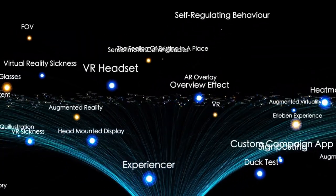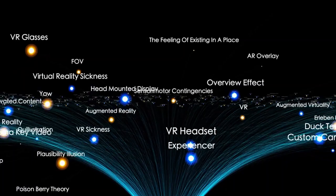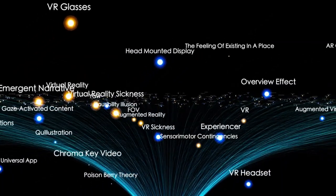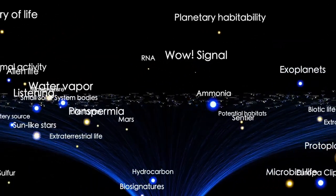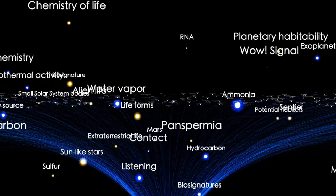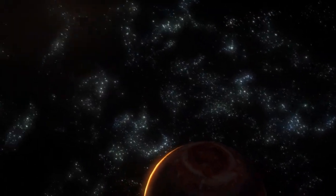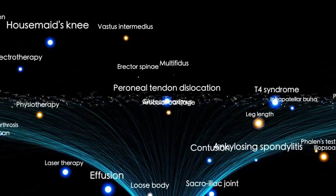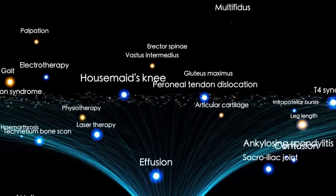However, our ability to observe the universe has a limit. This is because light, the main source of information about distant objects, travels at a certain speed. Since light does not move instantly but takes time to travel across space, we are only able to see things whose light has had enough time to reach us.